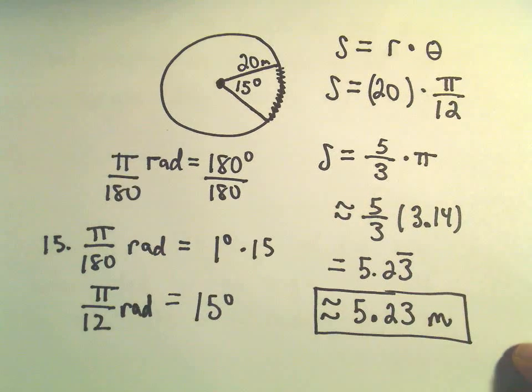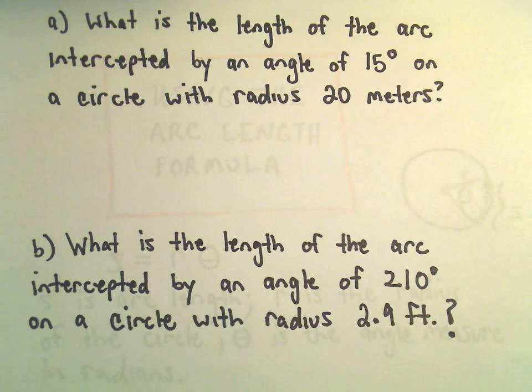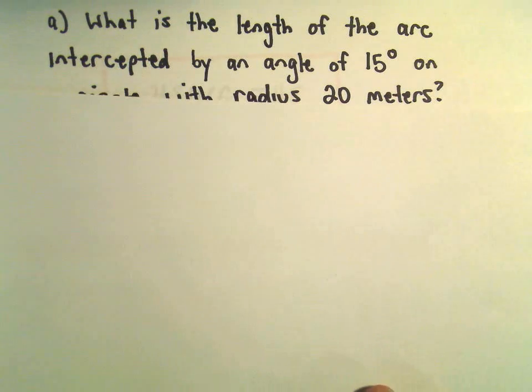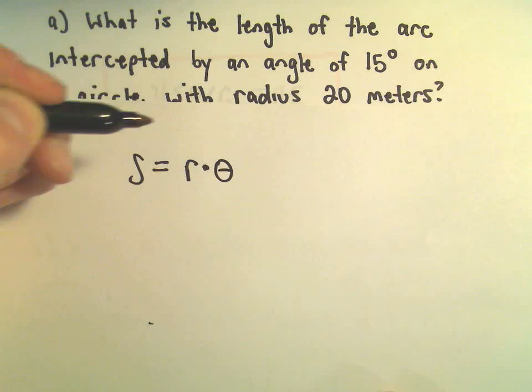Let's do one more here real quick, let's do the other one. Same basic idea, what's the length of the arc intercepted by an angle of 210 degrees on a circle with a radius of 2.9 feet? So exact same thing, so we'll have S equals R times theta.